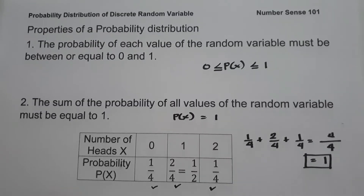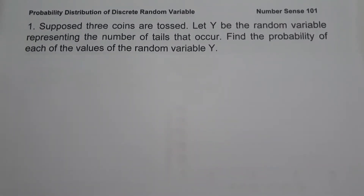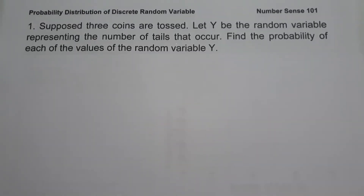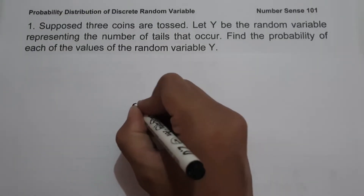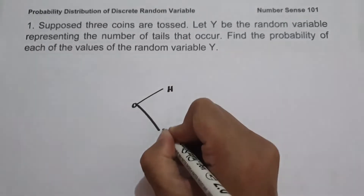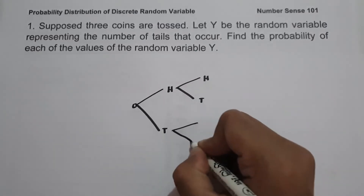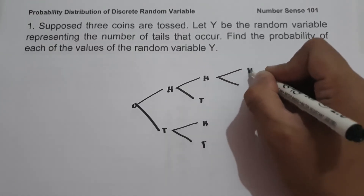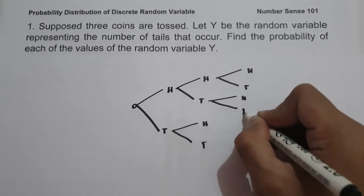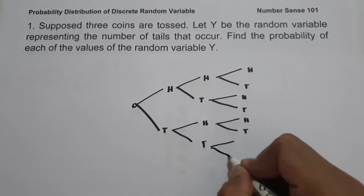So let's start and have an example. On example number one, suppose three coins are tossed. Let Y be the random variable representing the number of tails that occur. Find the probability of each of the values of the random variable Y. To find these probabilities, let us first illustrate how we can get the sample space. On the first toss we have head and tail, on the second toss we have head and tail, and on the third toss we have head and tail.